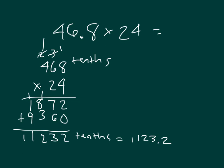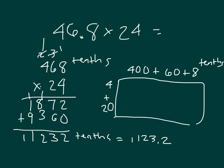With an area model, that would be 400 plus 60 plus 8 tenths, and then we have 4 plus 20 for the 24. 400 times 4 is 1,600, 4 times 60 is 240, and 4 times 8 is 32. That's 1,872. Adding those across, which does match my partial product there.